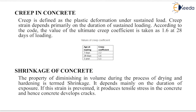It means that when we apply loading on a particular concrete member in the elastic range, then with the passage of time the deformation that occurs in the concrete structure will be in the plastic range. In the creep coefficient table, for 7 days the creep coefficient is 2.2, for 28 days it is 1.6, and for 1 year the creep coefficient is 1.1. This means that total creep deformation is directly proportional to time.